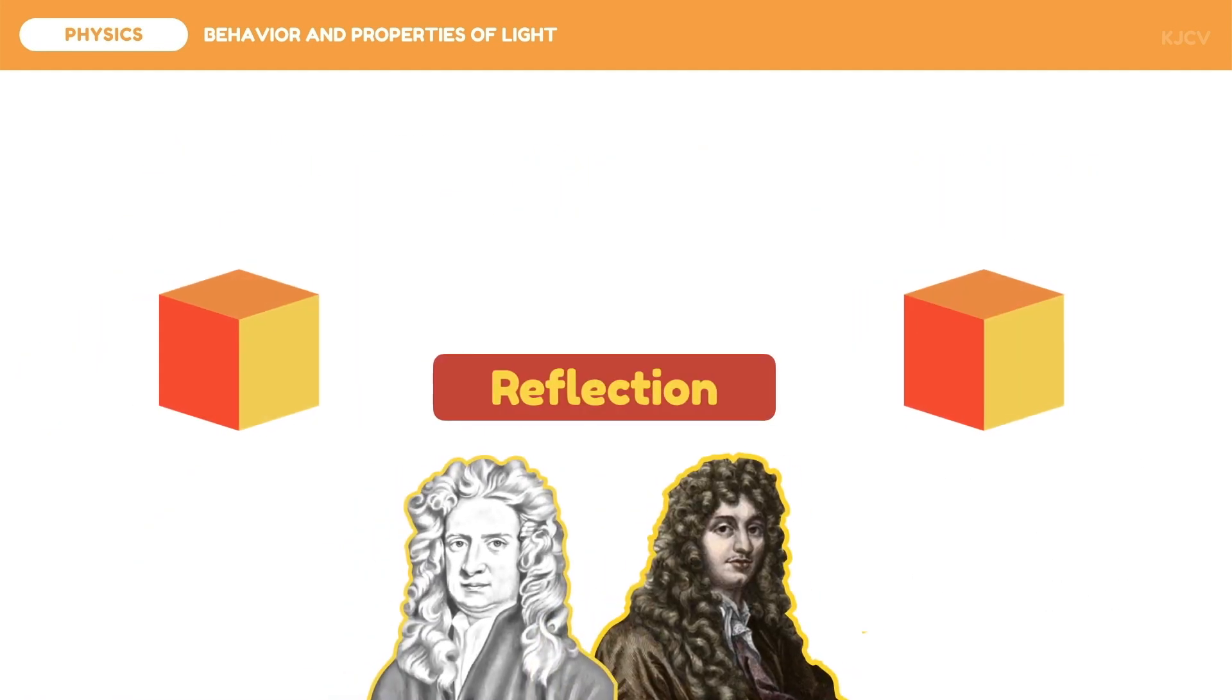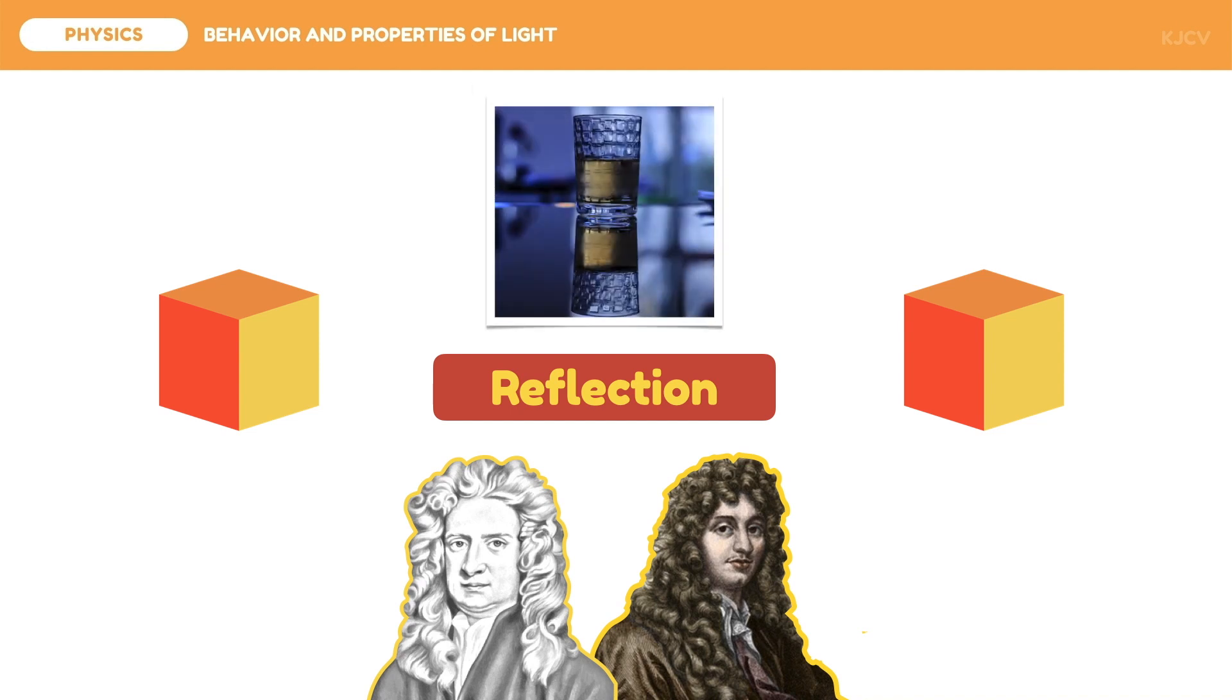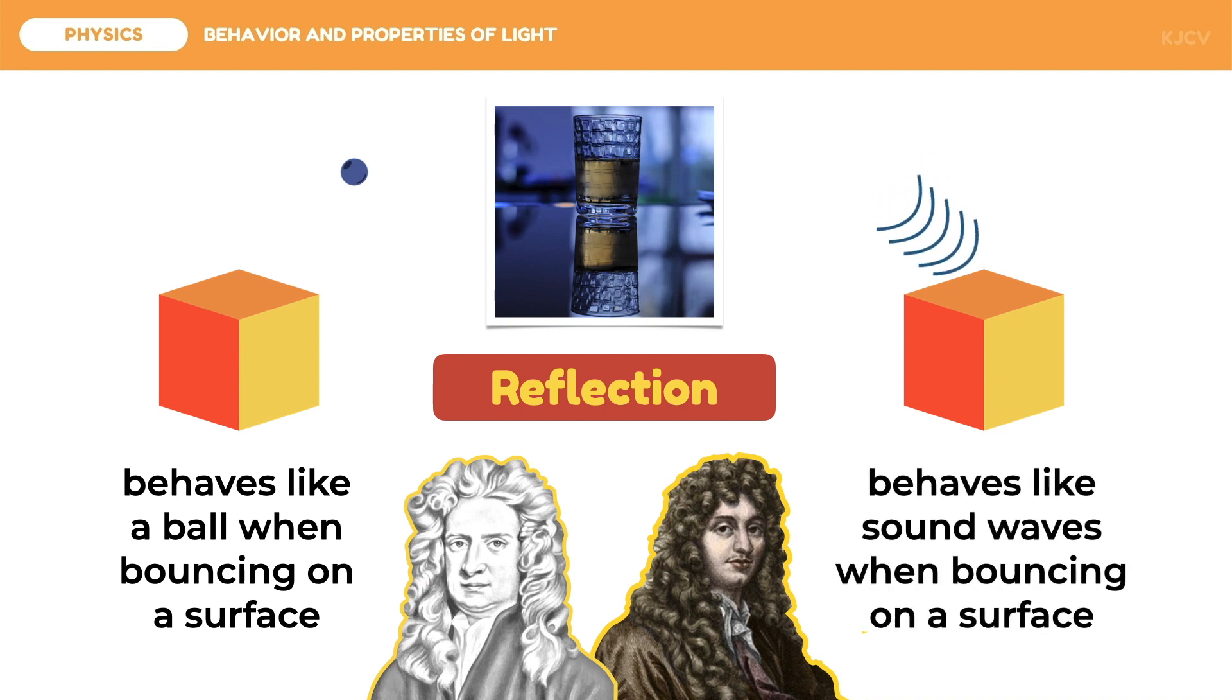Reflection is the phenomenon in which light bounces off a surface. This creates a mirror image of an object on a reflective surface. But how is this explained with the particle theory and the wave theory of light? Light as a particle is like a stream of balls that bounce off on a surface. Meanwhile, for waves, light behaves like sound waves when bouncing on a surface.